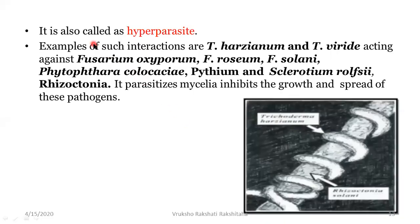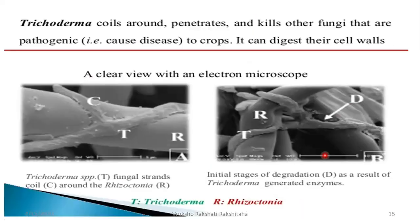Trichoderma is also called a hyperparasite. Examples of such interactions: Trichoderma harzianum and Trichoderma viride act against Fusarium oxysporum, Fusarium roseum, Fusarium solani, Phytophthora colocasiae, Pythium, Sclerotium rolfsii and Rhizoctonia. Trichoderma parasitizes the mycelia and inhibits the growth and spread of pathogens. In this pic, the hyphae of Rhizoctonia solani can be seen, and Trichoderma has completely coiled around it, strangulating it. In another pic, you can see Trichoderma coiling and the cell wall of the pathogen already being digested.